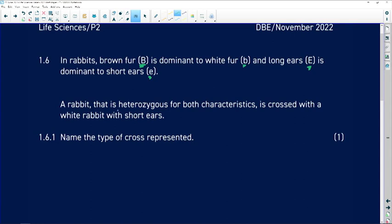A rabbit that is heterozygous for both characteristics - so we've got a rabbit heterozygote for fur color and heterozygote for ear length - is crossed with a white rabbit with short ears.